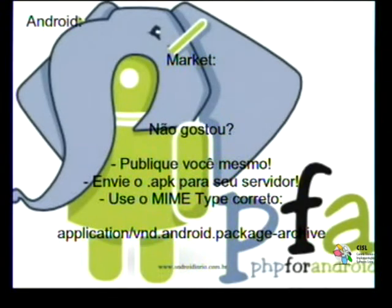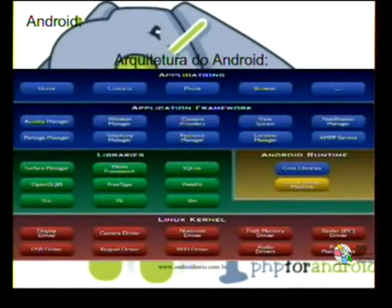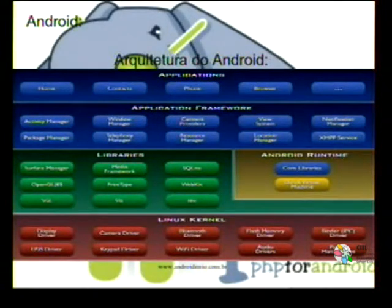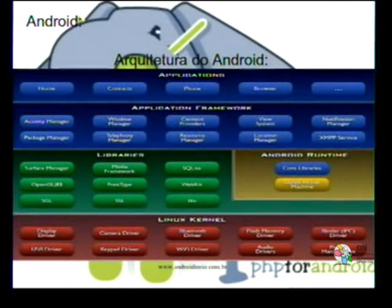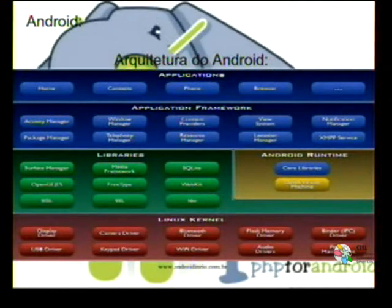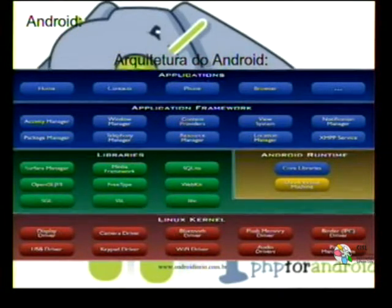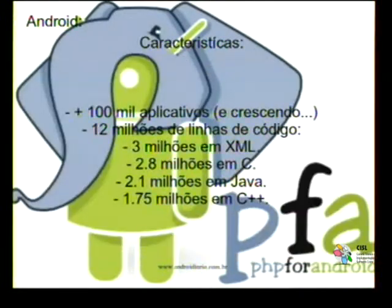The base of Android runs on Linux. From there you load the libraries shown in green. You have the Dalvik VM in yellow. At the top in blue, you have the application framework providing connectivity, internet, telephony, messaging services, location, and applications like the home screen, contacts, phone, browser, etc. Android today has more than 400,000 applications in the marketplace. It was built with Java, C, XML, C++, and also has some assembly code.